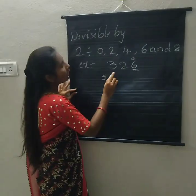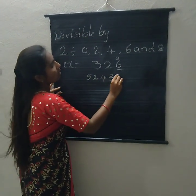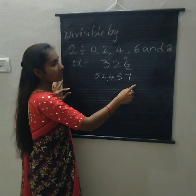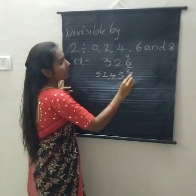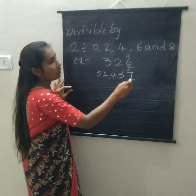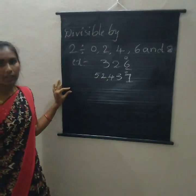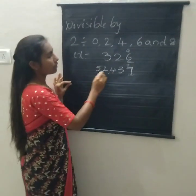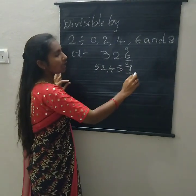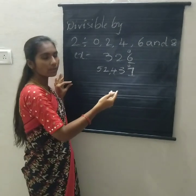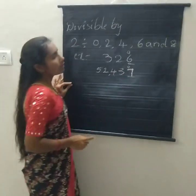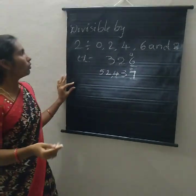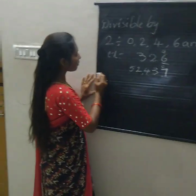Now I am taking a 5-digit number: 52,437. In this number, which number is in the one's place? 7. So is 7 an even number or odd number? 7 is an odd number. Odd numbers are not divisible by 2. So 52,437 is not divisible by 2, because the one's place is 7. Next we are checking the divisibility of 5.